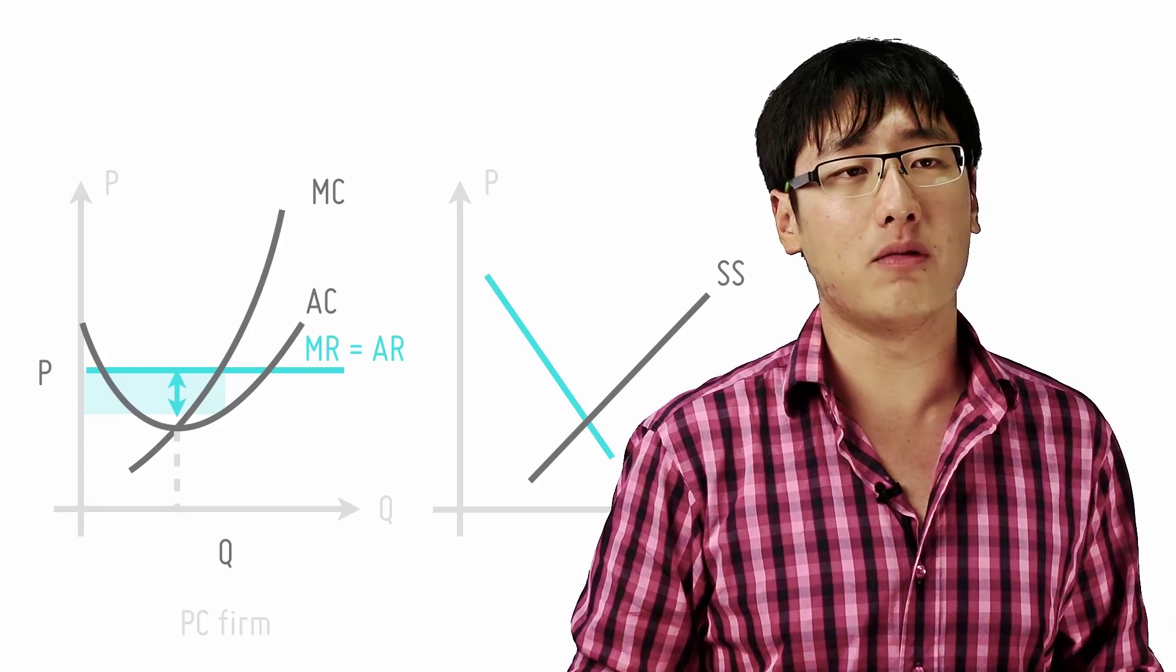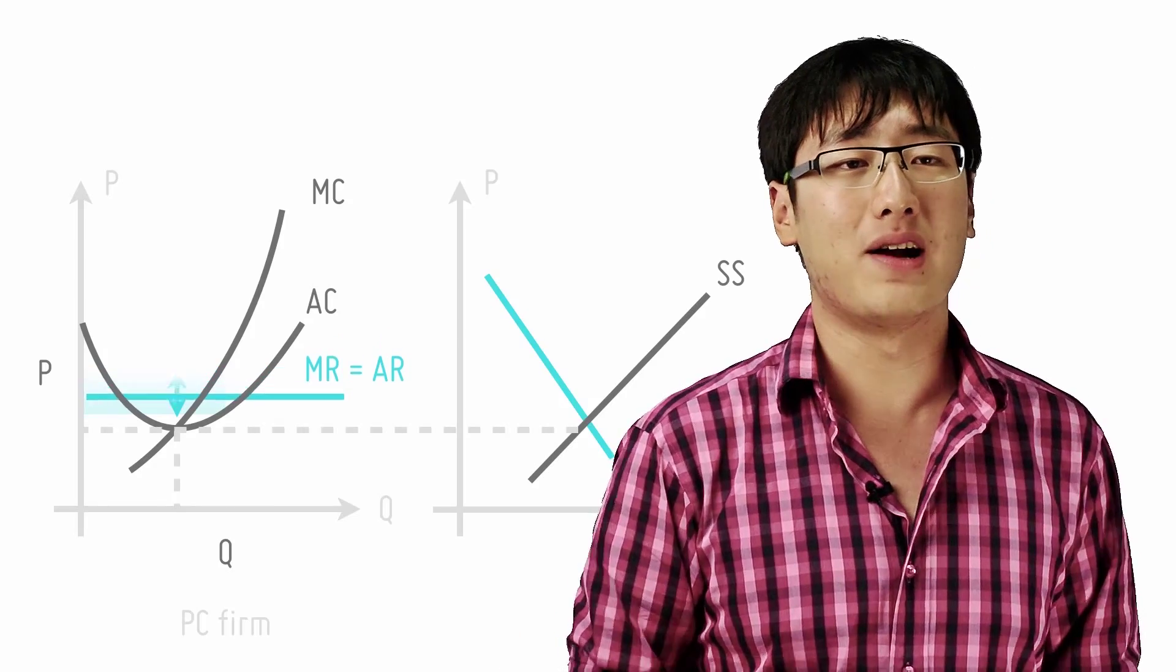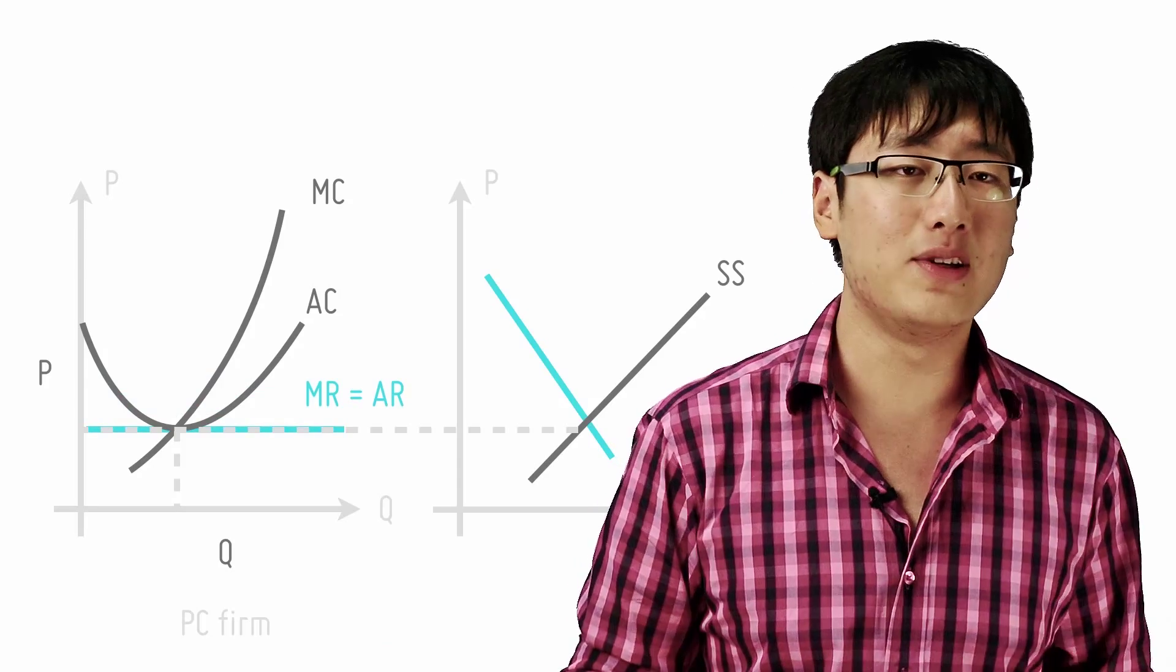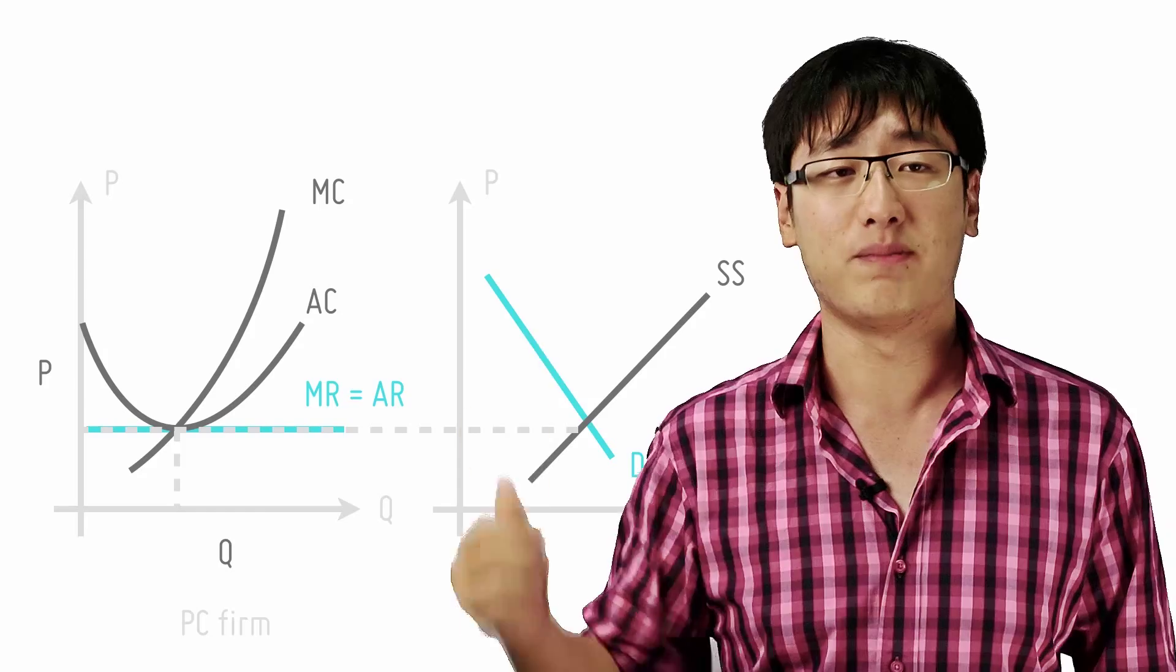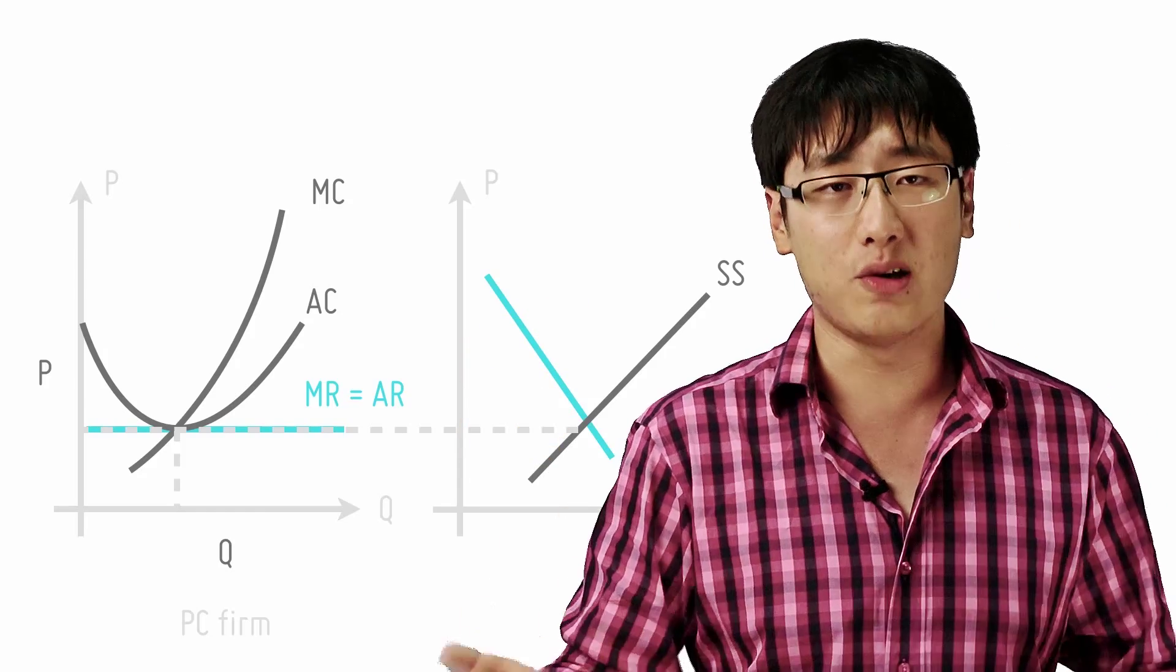And when will it stop? Well, people will stop entering when there are no longer any supernormal profits and that happens when P is equal to AC in the firm of a perfectly competitive market. And that's how we arrive at a new price in the market.